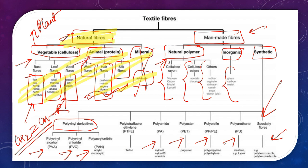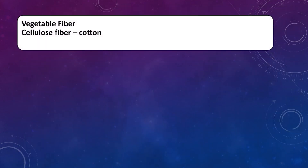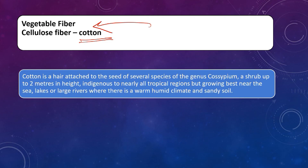The first natural fiber classification: vegetable fiber. Cotton is basically a cellulose-based natural fiber. Cotton is basically the hair attached to the seed of several species of the genus Gossypium, whose seed has some hairs — that hair is called cotton. The shrubs may be up to two meters in height. These cotton-based fibers are produced in warm, humid climates. There is also black soil, also called cotton soil, which is good for the formation of cotton plants.